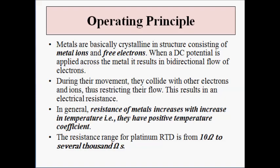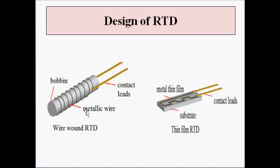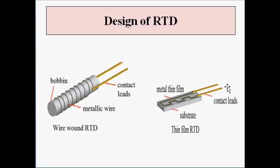RTDs are available in many configurations and designs. The two preferred configurations are: first, the wire wound type RTD, which consists of a bobbin with metallic platinum wire wound over it with two contact leads connected to the DC voltage source; and second, the thin film RTD, which consists of a substrate with thin films or layers of platinum or any other metal with contact leads connected to the DC voltage source.